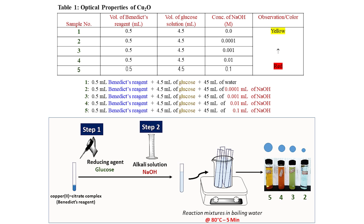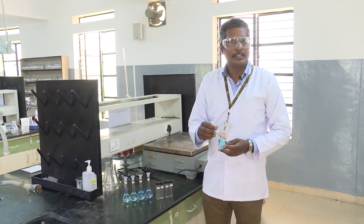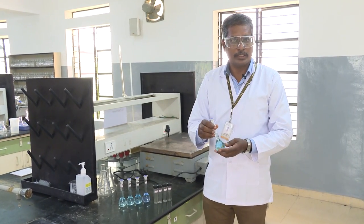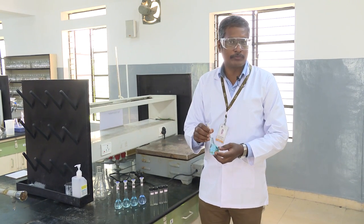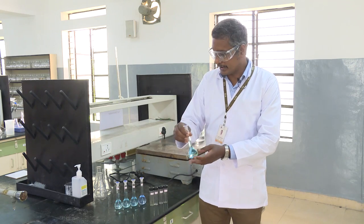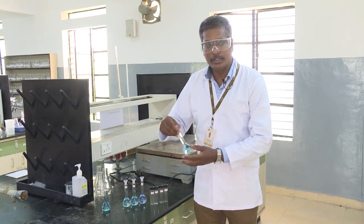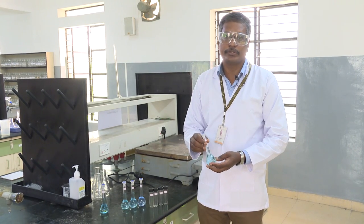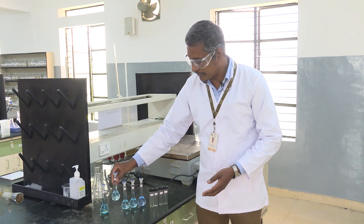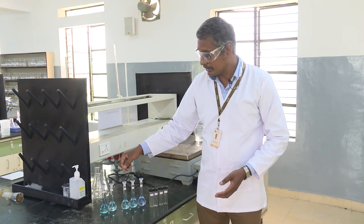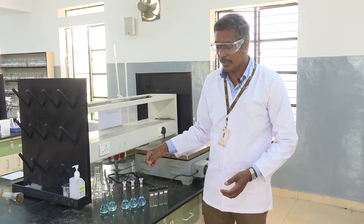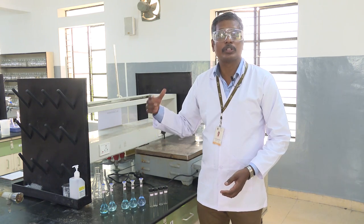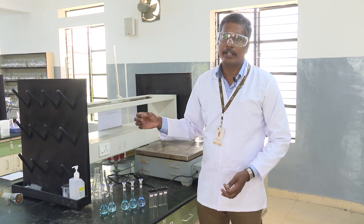We have prepared various concentrations of sodium hydroxide — take 45 ml of this and make all the other 4 samples. Sample 1 has 0.5 ml Benedict, 4.5 ml glucose, and 45 ml water. Sample 2 has 0.5 ml Benedict, 4.5 ml glucose, and 45 ml of 0.0001 M NaOH. Likewise, both glucose and Benedict volumes remain the same (0.5 ml and 4.5 ml), while we vary the 45 ml NaOH concentration across 0.001, 0.01, and 0.1 M.